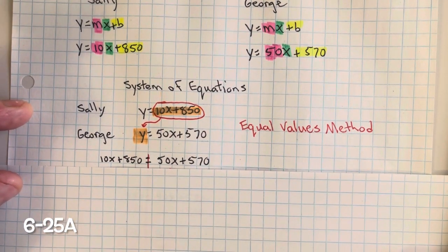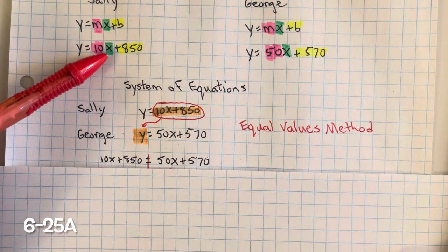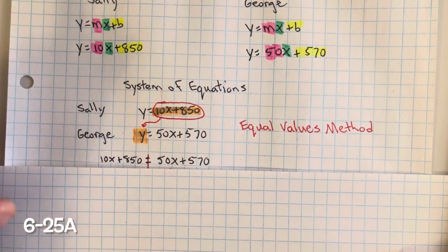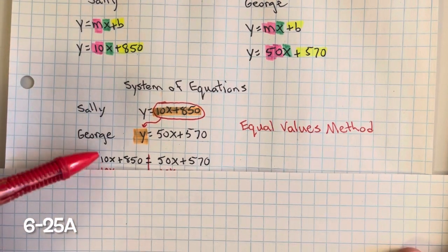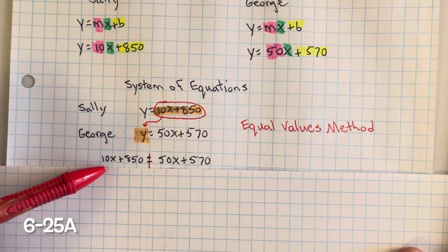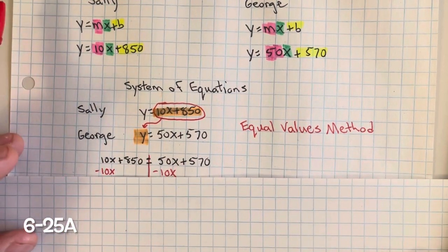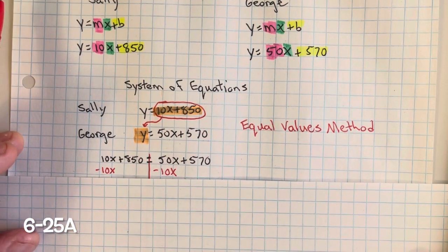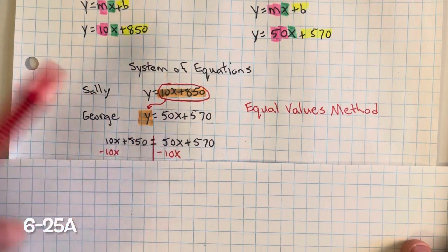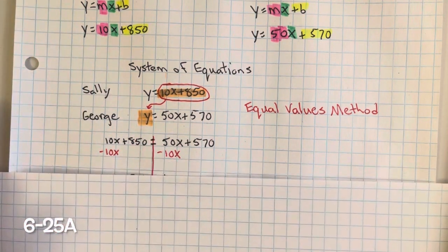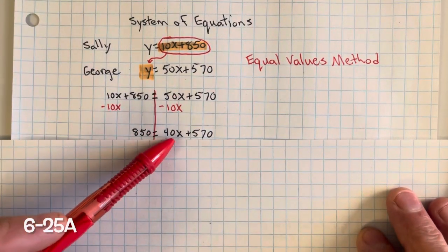Now we go ahead and solve for x. X represents the number of weeks, and we're trying to find out the number of weeks when they'll be equal. We want to move the variable to the side that has a greater value — 50 is greater than 10 — so we're going to subtract 10x from both sides of the equation. This creates a zero pair. 50x minus 10x equals 40x.